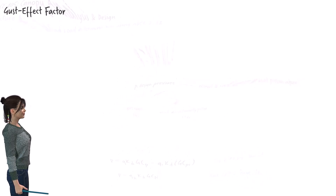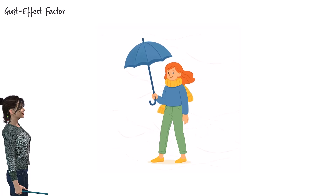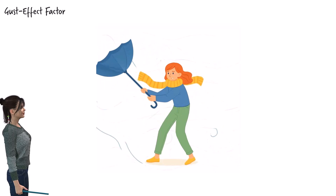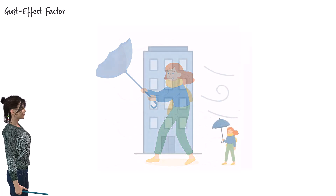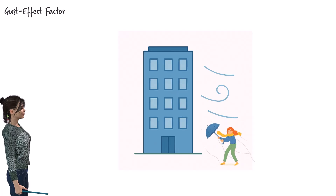Let's start with the gust effect factor. Picture holding an umbrella on a windy day. The wind doesn't blow steadily — it surges. One moment it's calm, and the next, a gust yanks the umbrella. Now think of a structure in that same wind. If we designed only for average wind, we'd miss the higher forces caused by those brief, intense gusts. The gust effect factor adjusts the wind pressure to account for them.